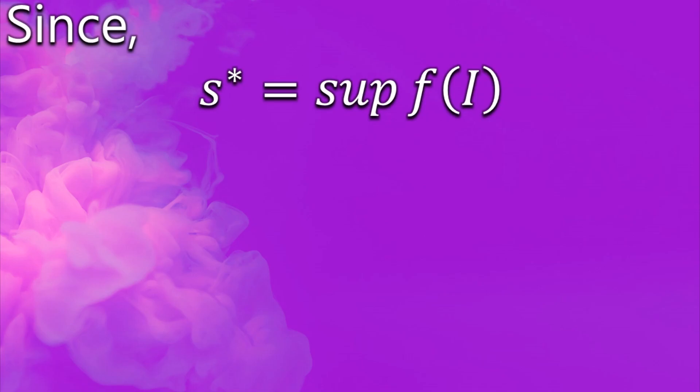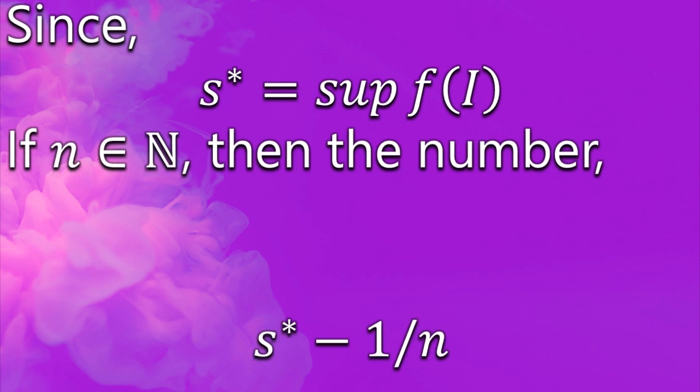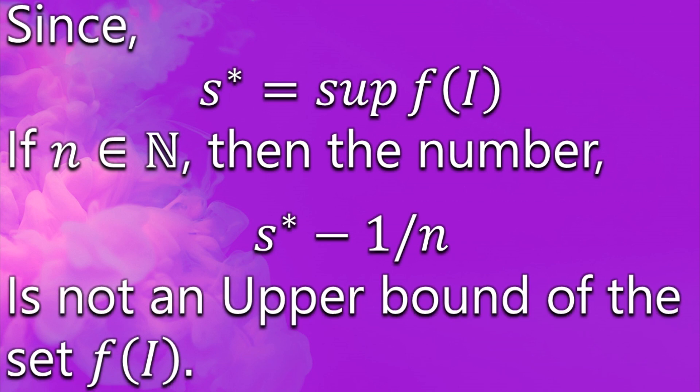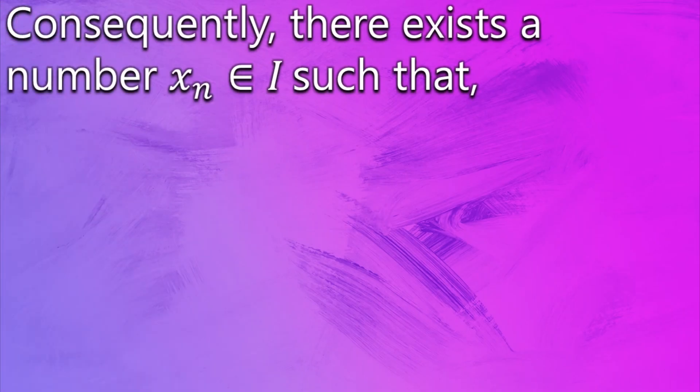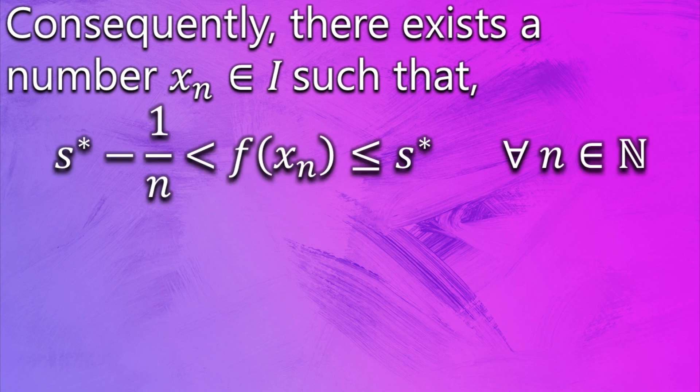Now s* is an upper bound of F(I), but if 1/n gets subtracted from it, where n belongs to the set of natural numbers, then s* - 1/n doesn't remain the upper bound of the set F(I). Consequently, there exists an element f(x_n) that lies between the supremum of F(I), s*, and s* - 1/n.